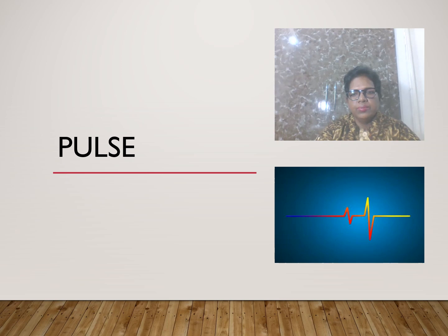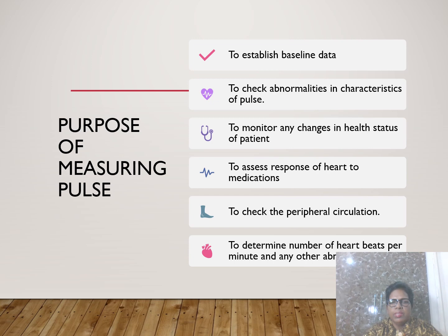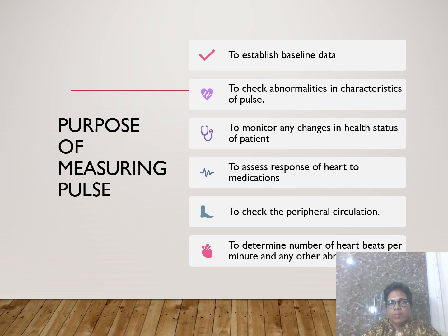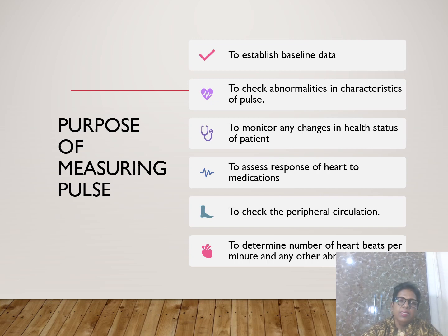Now the second vital sign: pulse. The purposes of measuring pulse include: to establish baseline data; to check for abnormalities and characteristics of pulse; to monitor any change in the health status of a patient; to assess the response of the heart to medications; to check peripheral circulation; and to determine the number of heartbeats per minute and any abnormalities.